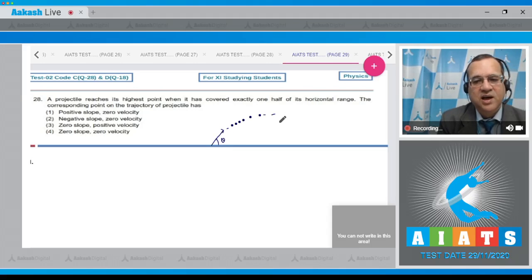At the highest point, you know that it has only one component of velocity: u cos theta. If this is u and this is theta, this distance is R by 2. Now at this point, the projectile is moving horizontally - the slope is zero, whereas the velocity is in this direction so it is positive.